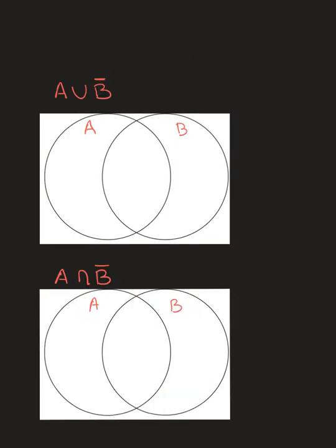Those were simpler examples we saw last time. Now we're going to look at shading where things are a little more complicated — we could have sets, unions, intersections, and we can also combine them with complements.